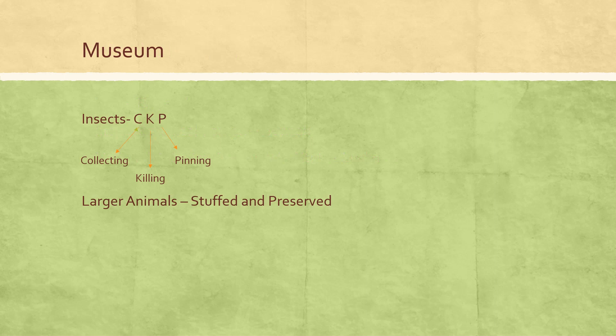In a museum, insects are stored after doing three steps. I have created a short trick: CKP - which stands for Collecting, Killing, and Pinning. For larger animals, they are stuffed and preserved.